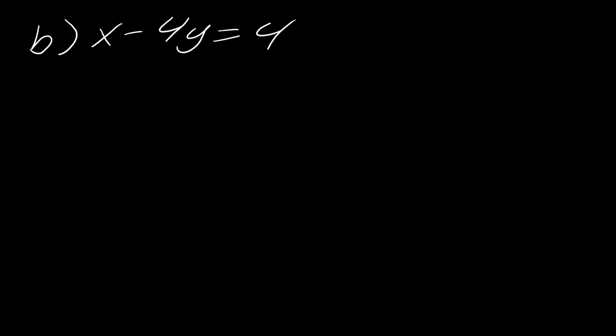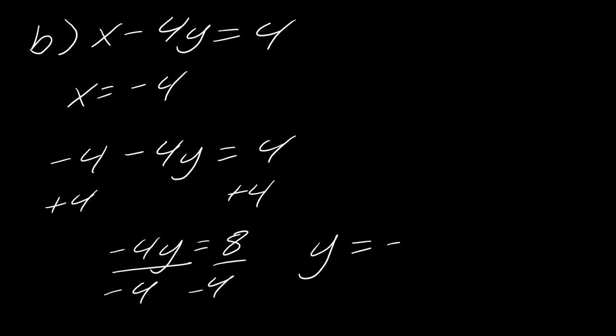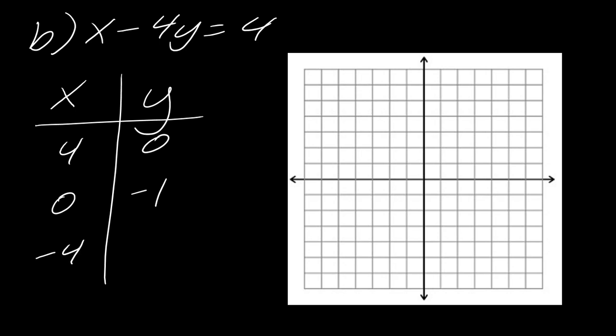Now I need to find that third point. What if I choose x equals negative 4? Plugging in x equals negative 4, I add 4 to each side to get negative 4y equals 8, then divide both sides by negative 4 to get y equals negative 2. This gives me a third point. You can literally choose whatever numbers you want — there's no magical way I'm coming up with this. It just serves as that check. The big thing is: when we plot the three points, do they line up in a line?